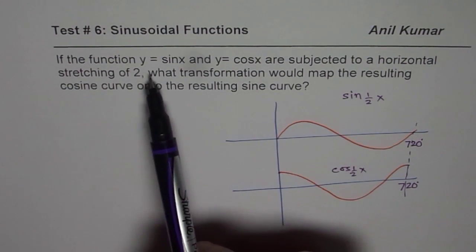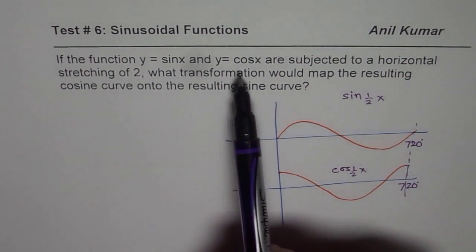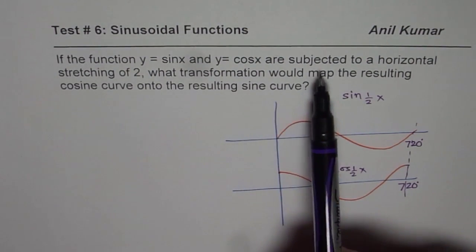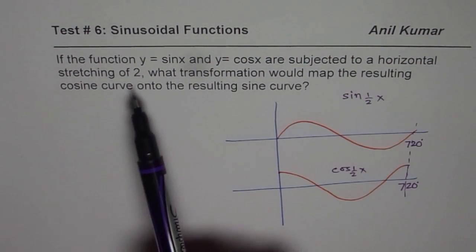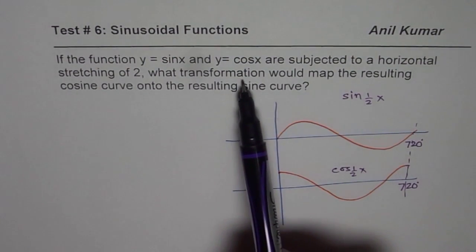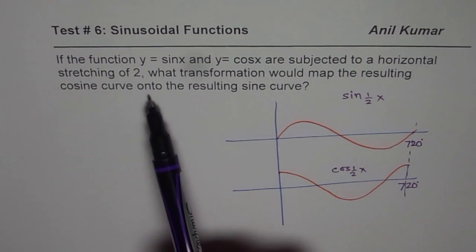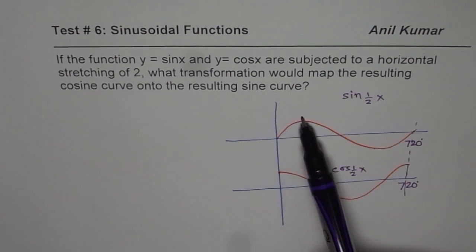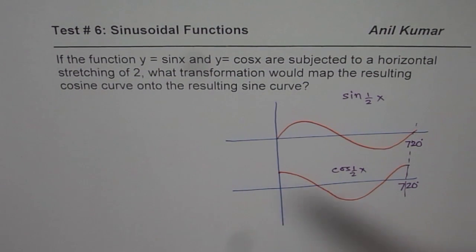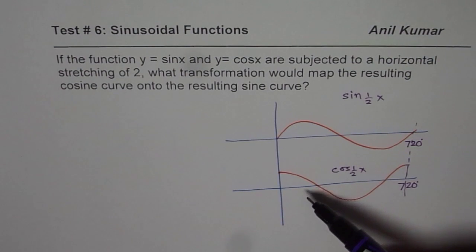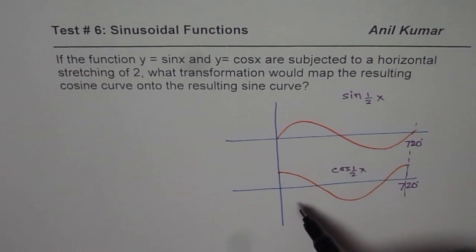if the function y equals sine x and y equals cos x are subjected to a horizontal stretching of 2, what transformation would map the resulting cosine curve onto the resulting sine curve? So we have to map cosine curve to the sine curve. So what is,